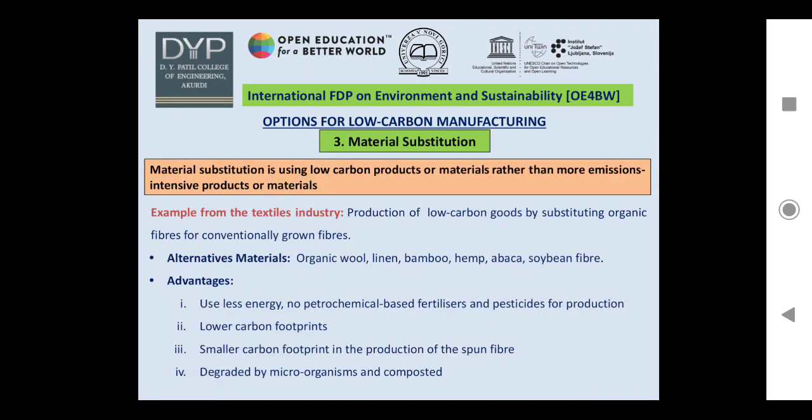The third option is material substitution — using low carbon products or materials rather than more emission-intensive or conventional products. An example from the textile industry is the production of low carbon goods by substituting organic fibers for conventionally grown fibers. Alternative organic materials include organic wool, linen, bamboo, hemp, abaca, and soybean.